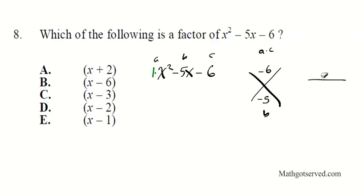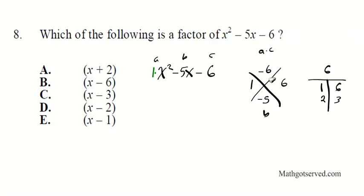Making a multiplication chart for 6: 1 times 6 and 2 times 3. We need two numbers that multiply to negative 6 and add to negative 5. Testing the first pair: if we use positive 1 and negative 6, then 1 plus negative 6 equals negative 5, and 1 times negative 6 equals negative 6. That works. The pair 2 and 3 is a trap — be careful.